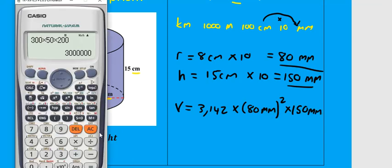So we go to our calculator to work that out. It's 3.142 multiplied by 80 squared multiplied by 150.